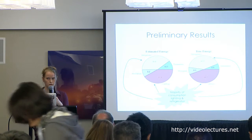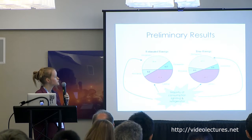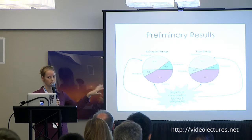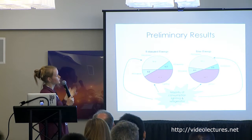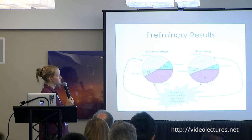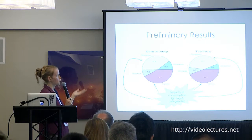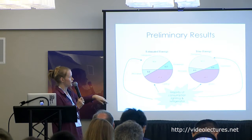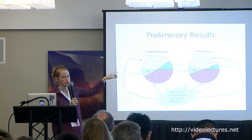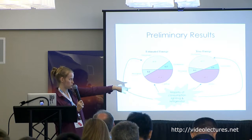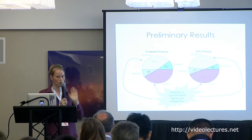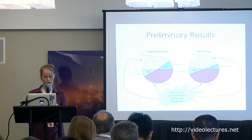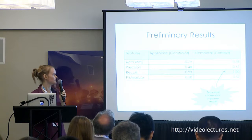Looking at preliminary results, we show the percent of energy allocated to each appliance — refrigerator, dishwasher, microwave, and lighting. In aggregate, the model is doing pretty well: the majority of estimated energy is assigned to the refrigerator and lighting, which is correct, and the dishwasher and microwave receive much less. However, looking at the actual on/off classification results, performance is not as strong.